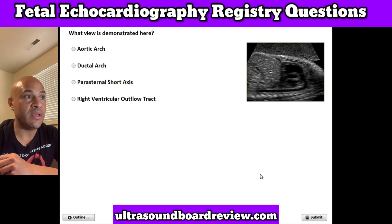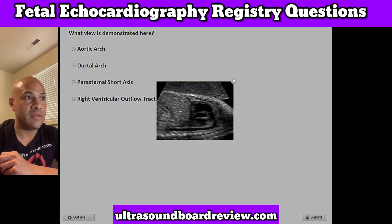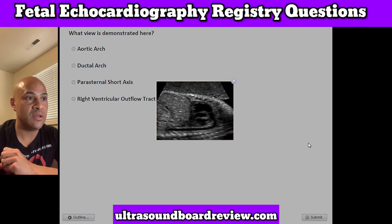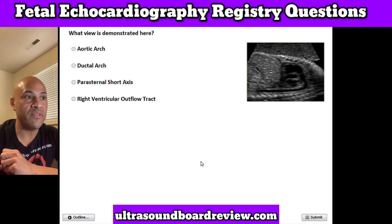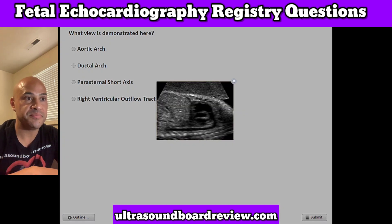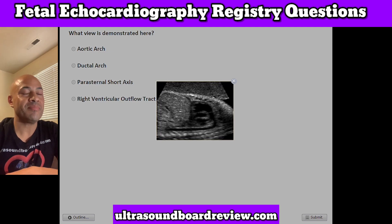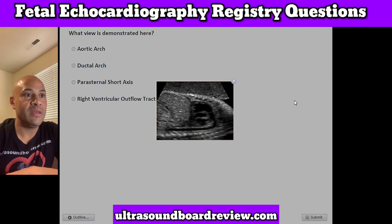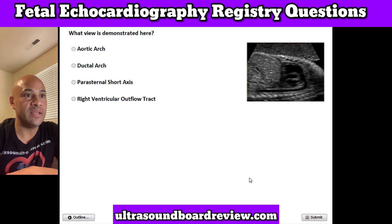Question 20. What view is demonstrated here? A. Aortic arch, B. Ductal arch, C. Parasternal short axis, or D. Right ventricular outflow tract. The answer is B. Ductal arch.